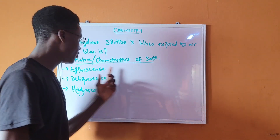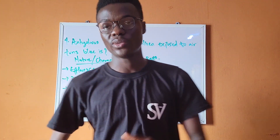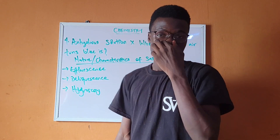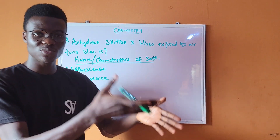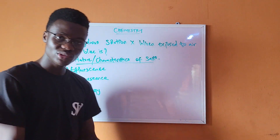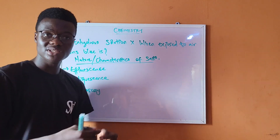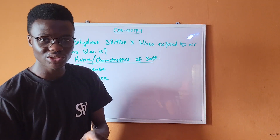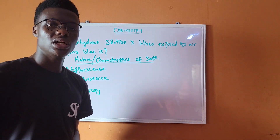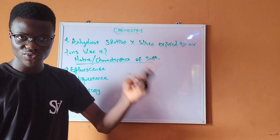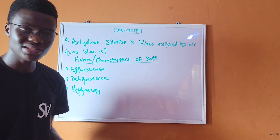The three characteristics of salts are efflorescence, deliquescence, and hygroscopy. Efflorescence is when a hydrated salt exposed to the atmosphere loses its water of crystallization to become anhydrous. A hydrated salt contains water; anhydrous means it has no water.